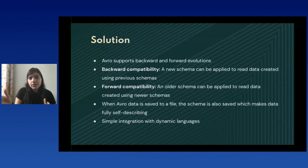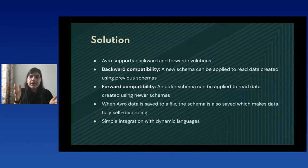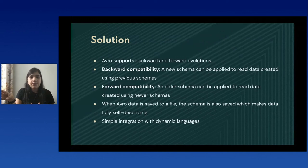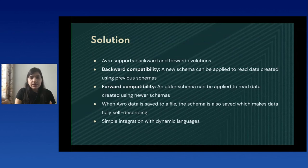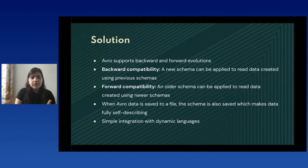For us, the solution required both backward and forward schema evolution. For backward compatibility, you can use a new schema to read data created using a previous schema. For forward compatibility, you can use an older schema to read data created using newer schemas. Avro has very simple integration with dynamic languages and since it stores both the data definition and data together, it makes the whole data fully self-describing — you can make sense of the data directly from the Avro file.